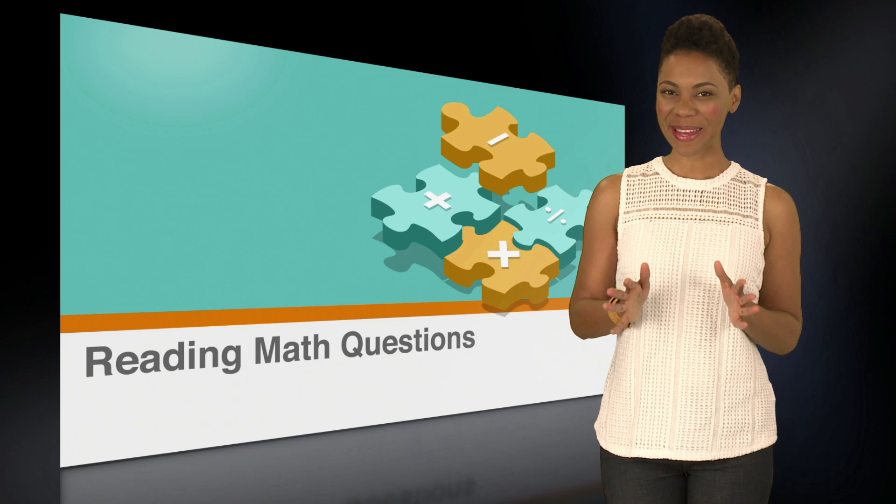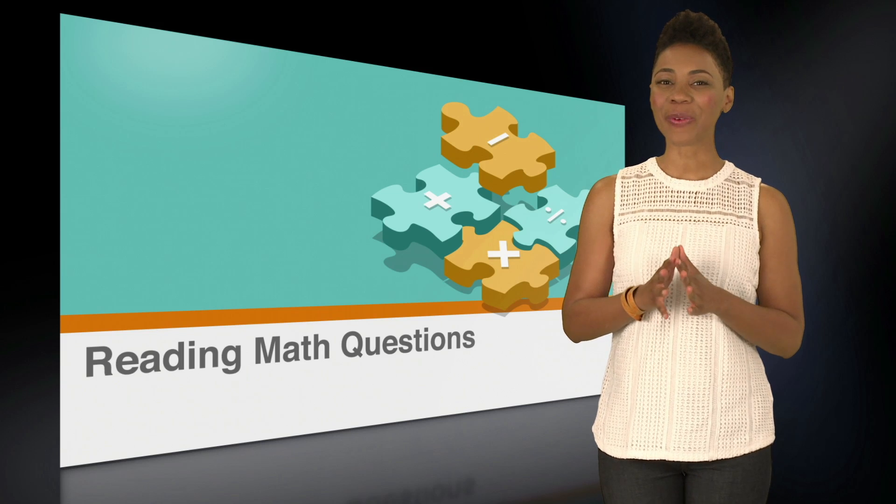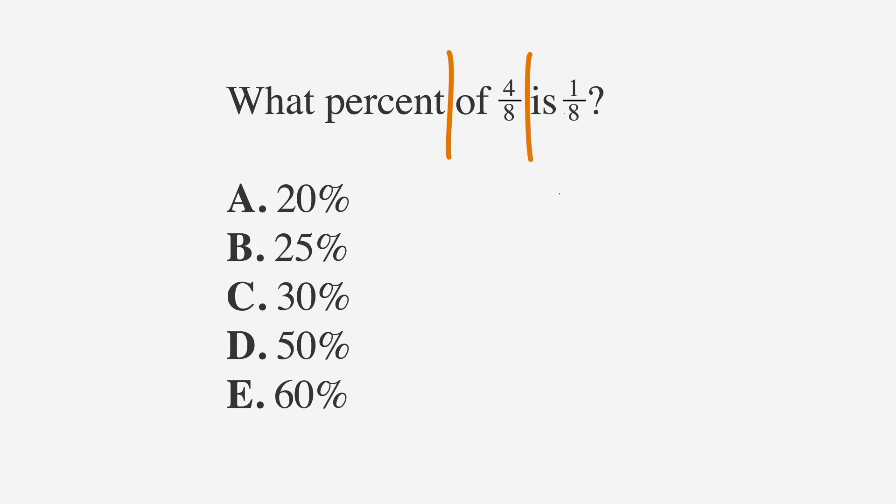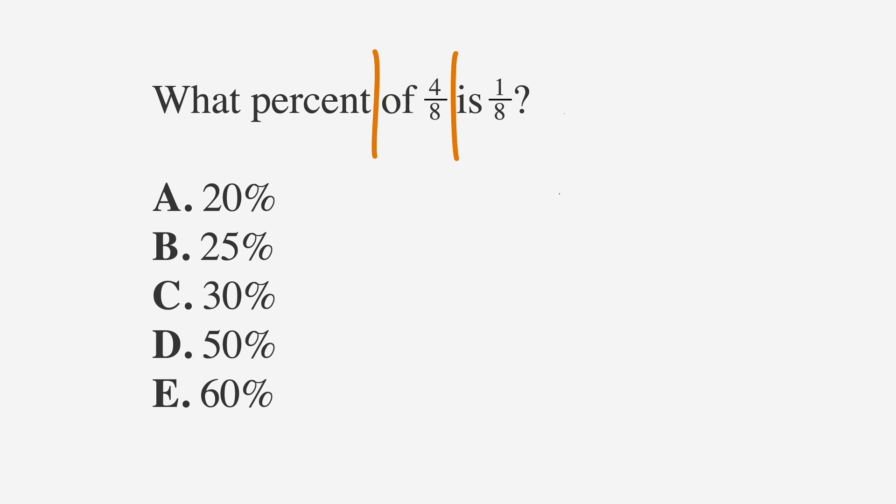How'd you do? Okay, let's work through the problem and see if we get the same answer. We can solve this problem using an equation: is over of equals percent over 100. We substitute one-eighth in for is, since it's grouped with the word is in our problem, and four-eighths in for of, since it's grouped with of in our problem.